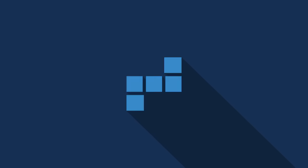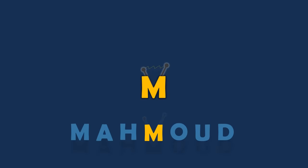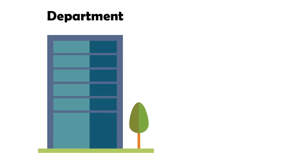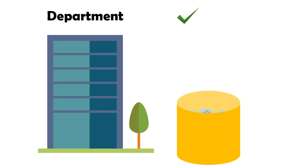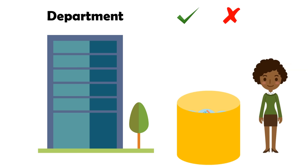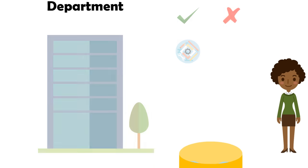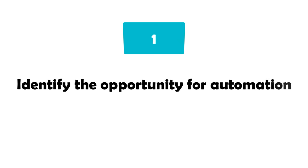Hello everybody. In this video we will talk about the business analyst in an RPA team and the responsibilities for a business analyst. Each department has different processes. Some of these processes are suitable for automation and some are not. The job of a business analyst is to select the appropriate processes that can be automated and bring benefits to the department. So the first task of a business analyst is the ability to identify the opportunity for automation.